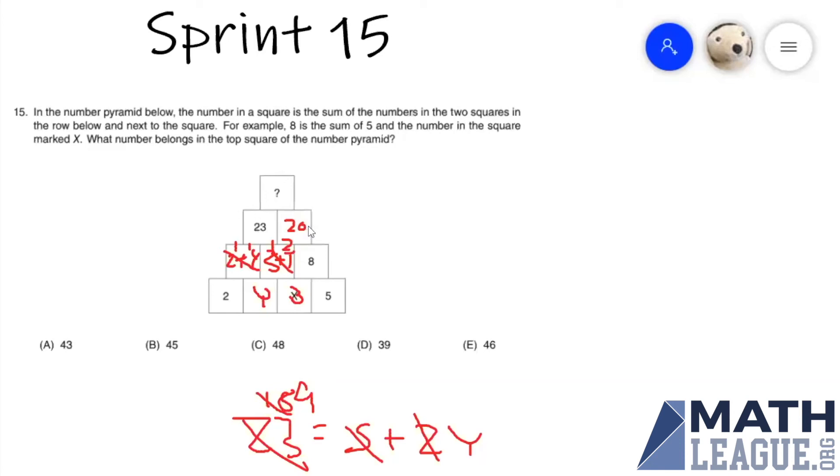And finally, 23 plus 20 gives us the number here, which is 43, corresponding to answer choice A.